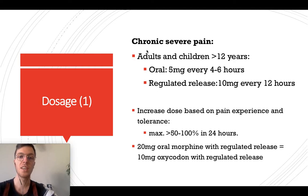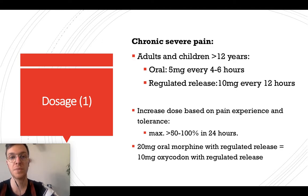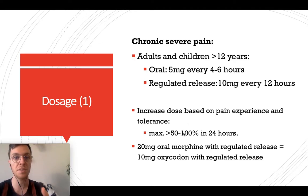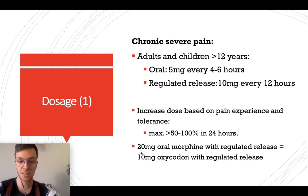For dosage in chronic severe pain in adults or children older than 12 years: an oral dose of 5 mg every four to six hours is allowed. For regulated-release capsules, 10 mg every 12 hours is correct. Increase the dose based on pain and tolerance — up to 50 to 100 percent every 24 hours. Note that 20 mg oral morphine equals 10 mg oxycodone when switching between regulated-release formulations.